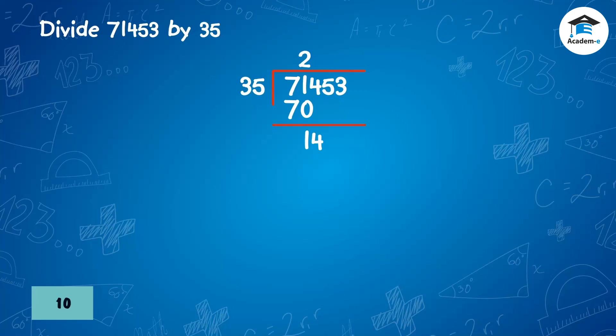Next, divide 14 by 35. Since 14 is less than 35, write 0 in the partial quotient. Multiply 0 and 35: 35 times 0 is 0. Subtract: 14 minus 0 equals 14. Bring down 5. Estimate how many 35s there are in 145 — we have 4: so 4 times 35 is 140.